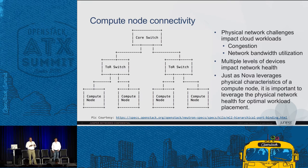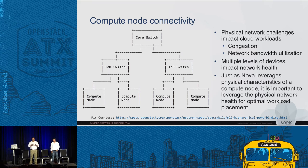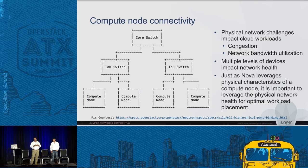Now let's look at the challenges in a network that impact workload placement. This sample diagram shows a common network topology: compute nodes connected to top-of-rack switches, which are further connected to a core switch as the aggregation layer. With multiple levels of network devices, there are multiple failure points. Network congestion, port status being up or down, and bandwidth utilization can all impact the quality of connectivity available for instances.